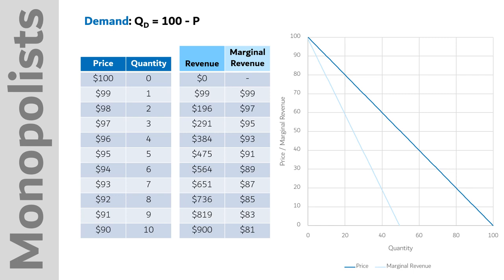If we put this on a graph, we get this. Demand is in dark blue, and the marginal revenue is the light blue line.